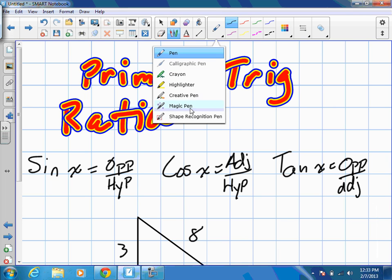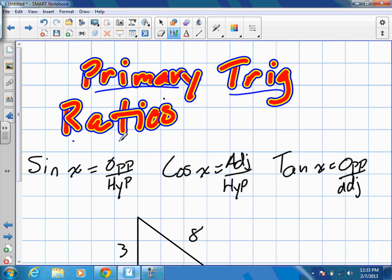Okay, so these are called primary trig ratios. You guys know them as SOHCAHTOA. That's a little acronym that helps us remember what the ratios stand for.